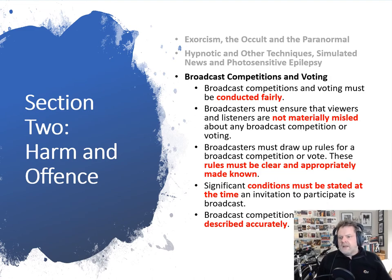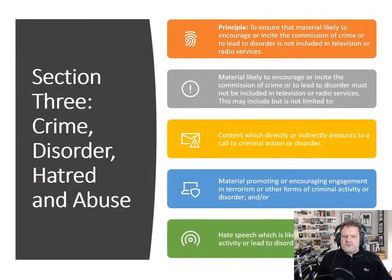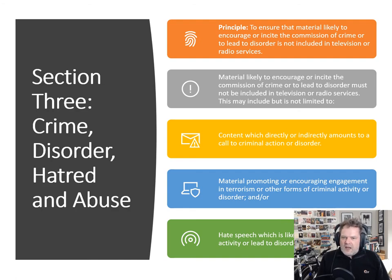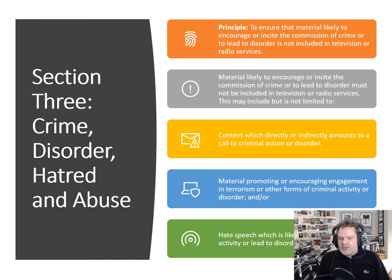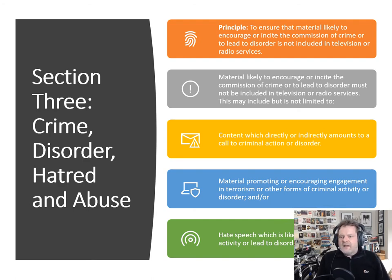Section 3 — Crime, Disorder, Hatred, and Abuse: the principle is to ensure that material is not likely to encourage or incite the commission of crime or lead to disorder. For example, you couldn't say on your programme 'let's all head down to Leicester Clock Tower and organise a rally' — that's not something a radio station should do. However, if you were interviewing somebody doing that as part of a news feature, you could put the counter argument — what does the disruption caused by protest lead to? Ofcom is not asking you to stay away from these issues, but to handle them in a particular way. We're not here to encourage or incite any kind of crime or disorder.